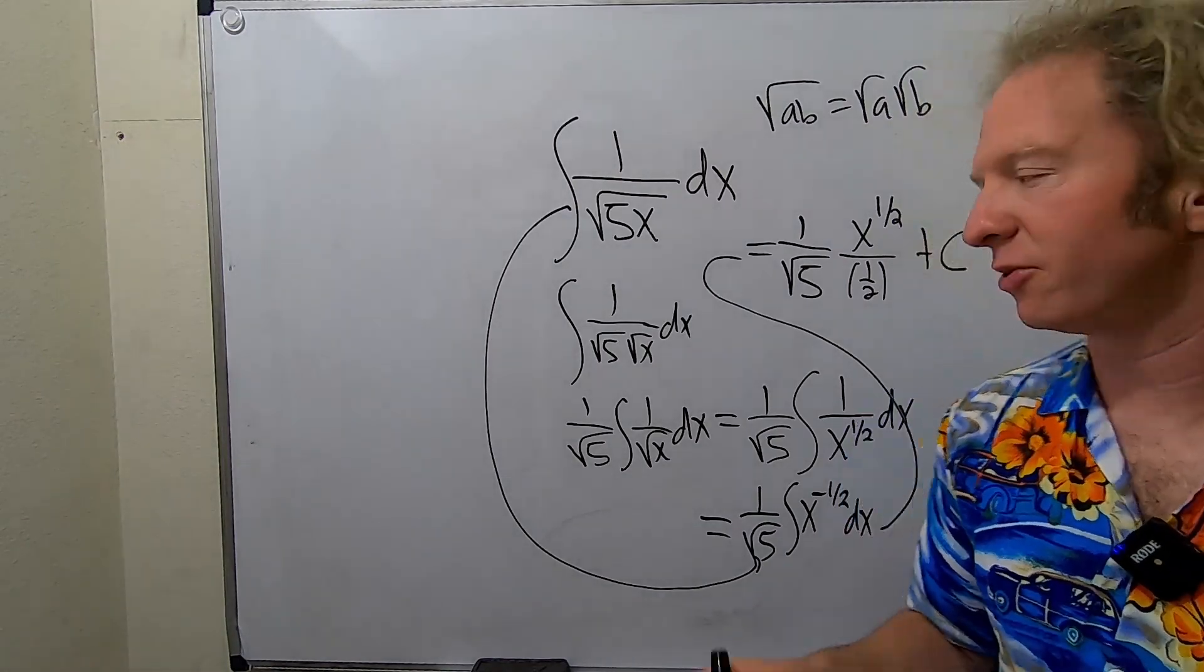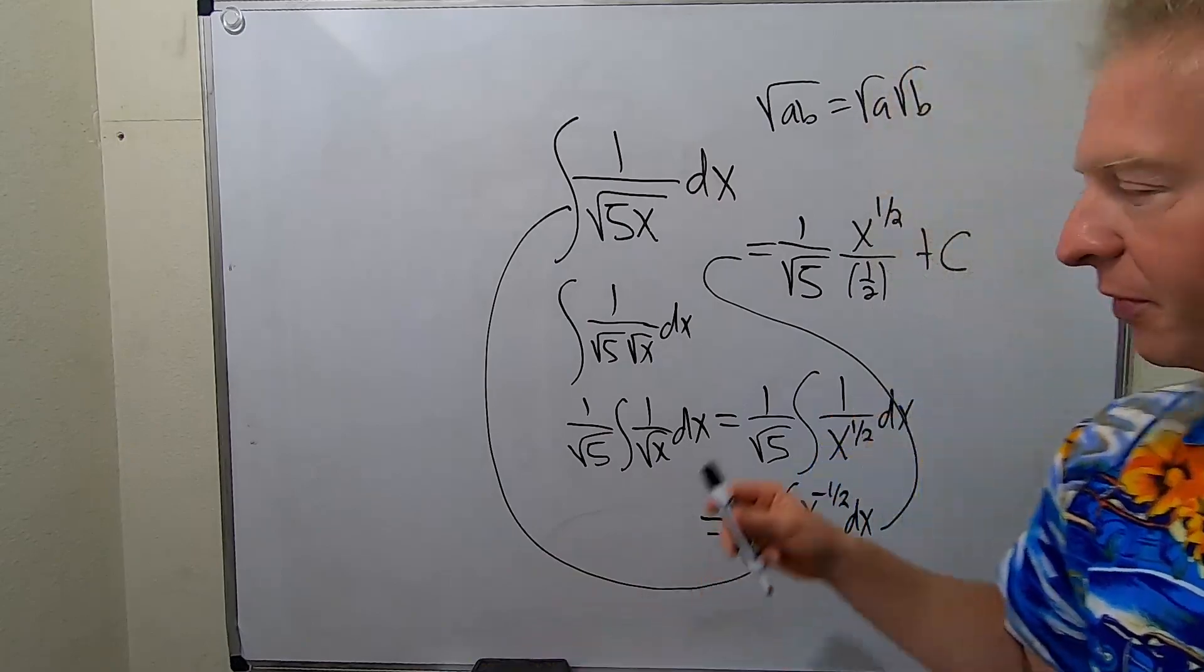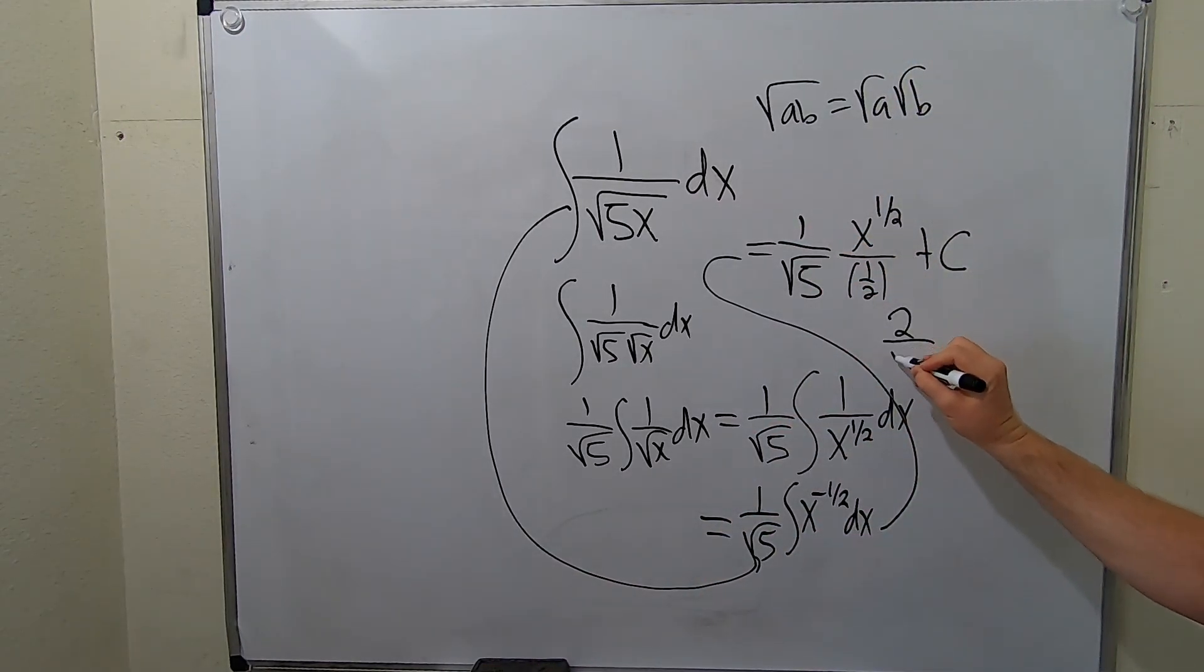So this is almost an acceptable answer. When you divide by 1 half, it's the same thing as multiplying by 2. So I'm going to put the 2 up here. So this is 2 over root 5 square root of x, going back to the square root here, plus c. And that would be a perfectly acceptable answer.